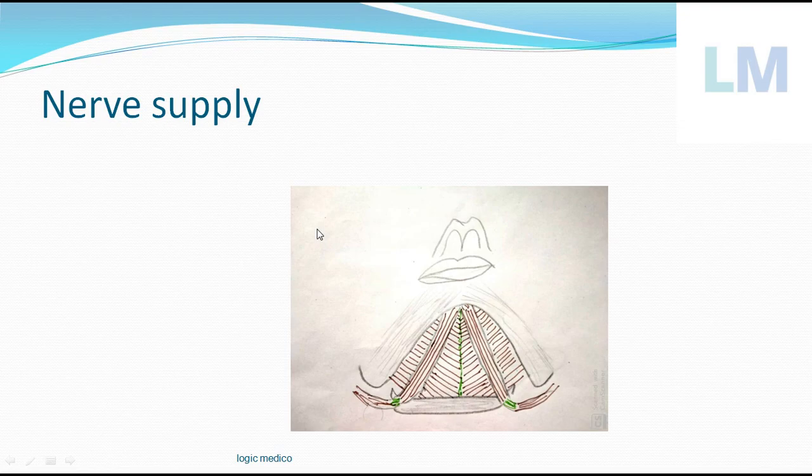Now to the nerve supply. The nerve supply is extremely simple. There is one nerve. Its name is nerve to Mylohyoid. It is a branch of mandibular division of trigeminal nerve or the fifth cranial nerve. The name of the nerve is very simple: nerve to Mylohyoid.